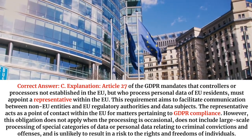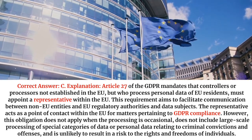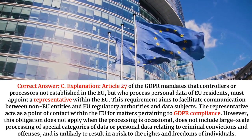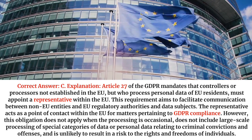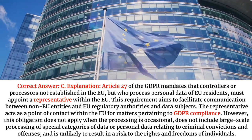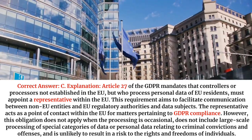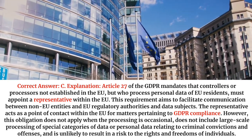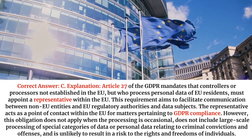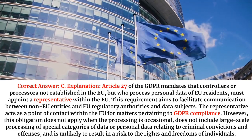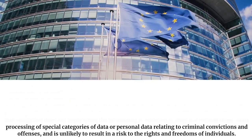Explanation. Article 27 of the GDPR mandates that controllers or processors not established in the EU, but who process personal data of EU residents, must appoint a representative within the EU. This representative acts as a point of contact for matters pertaining to GDPR compliance. However, this obligation does not apply when the processing is occasional, does not include large-scale processing of special categories of data or personal data relating to criminal convictions and offences, and is unlikely to result in a risk to the rights and freedoms of individuals.